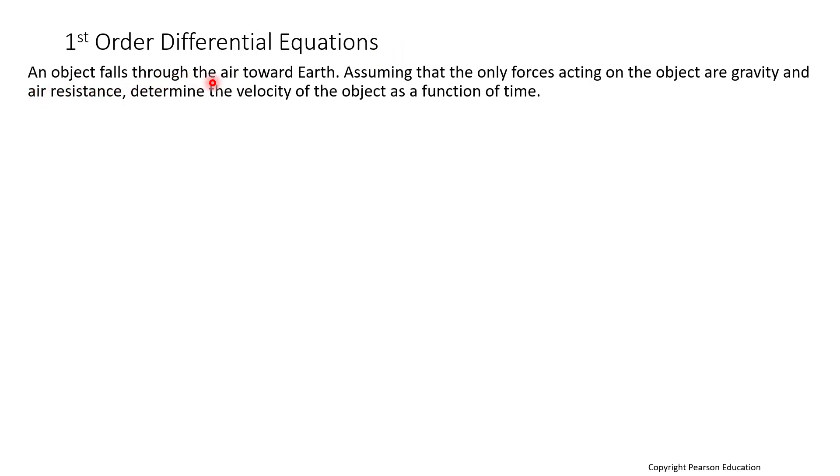So an object falls through the air towards earth, assuming that the only forces acting on the object are gravity and air resistance, determine the velocity of the object as a function of time.